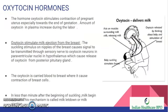The hormone oxytocin stimulates contraction of the pregnant uterus, especially toward the end of gestation. The amount of oxytocin in plasma increases during labor. Oxytocin also stimulates milk ejection from the breast. The suckling stimulus on the nipple causes signals to be transmitted through sensory nerves to oxytocin neurons in the paraventricular nuclei of the hypothalamus, which causes release of oxytocin from the posterior pituitary gland. Oxytocin is carried by blood to the breast, where it causes contraction of breast cells. In less than a minute after the beginning of suckling, milk begins to flow. This mechanism is called milk let-down or milk ejection.